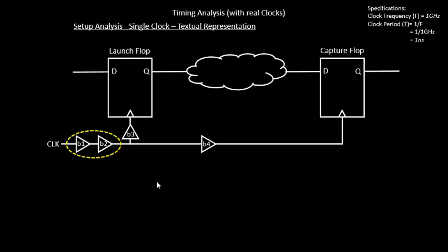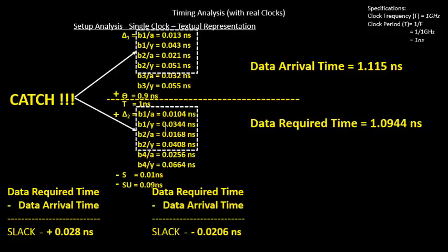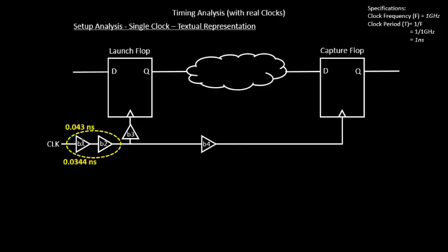Based on our OCV calculations, cell b1 shows two delays: 43 picoseconds (0.043 ns) and 34 picoseconds (0.034 ns). A cell showing two different delays at the same instant of time is practically not possible — just like a person running at two different speeds at the same instant is impossible. So this cell at time instant t can have either 43 ps or 34 ps, but not both.